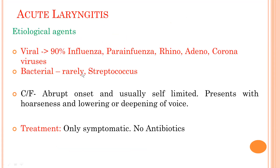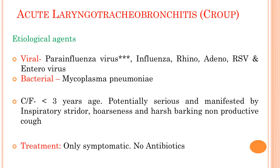Acute laryngitis is usually due to viruses — 90% of causes are influenza, para-influenza, rhinovirus, adenovirus, and coronavirus. Bacterial cause is very rare; Streptococcus is the causative agent. Onset is very abrupt and usually self-limited; no antibiotic is required. Acute laryngotracheobronchitis, also known as croup: viral agents include para-influenza virus (most important), influenza, rhinovirus, adenovirus, RSV, and enteroviruses. Bacterial cause includes only Mycoplasma pneumoniae. It usually affects children less than 3 years of age, manifested by inspiratory stridor, hoarseness, and non-productive harsh barking cough. Treatment is only symptomatic; no antibiotics.